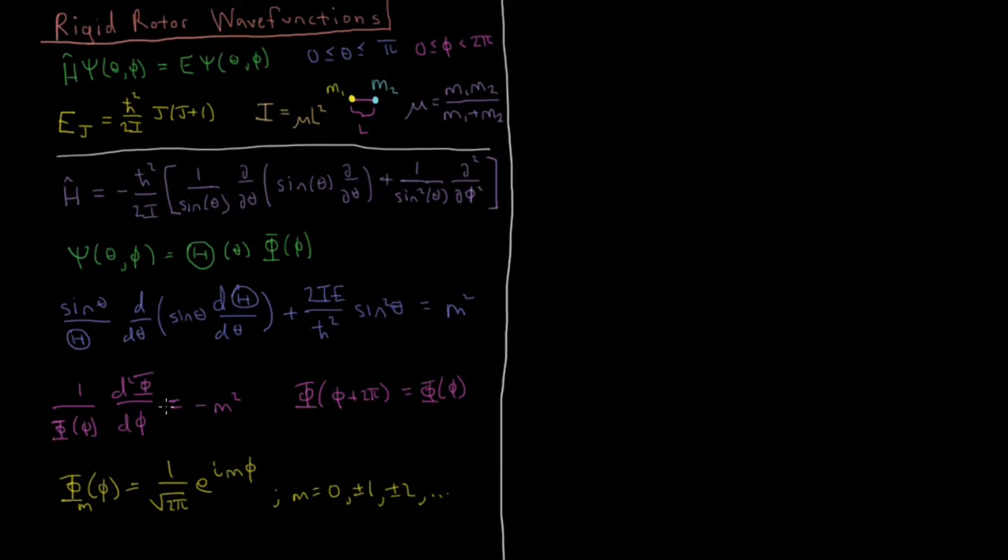And the solutions of this end up becoming theta, let me draw my big theta more consistently like I have been, that theta which is going to depend on this same quantum number j and this new quantum number we have down here from phi, m.